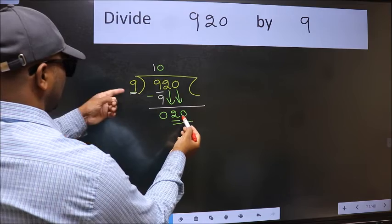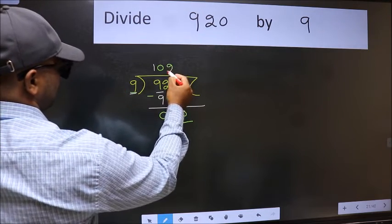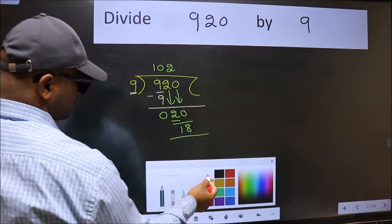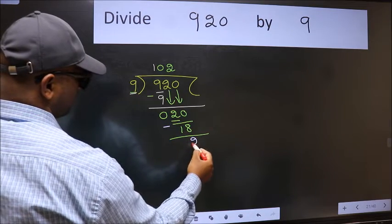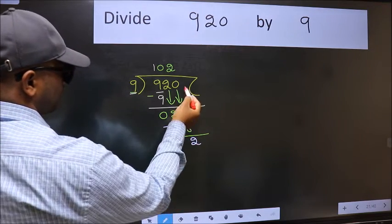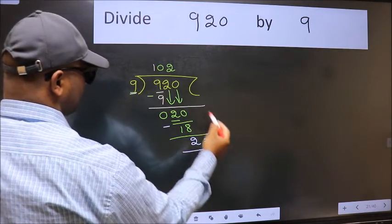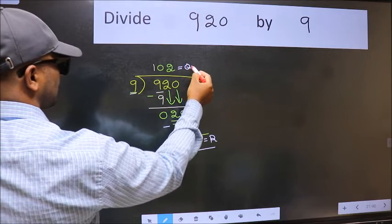A number close to 20 in the 9 table is 9 times 2 equals 18. Now we should subtract. We get 2. No more numbers to bring down. So we stop here. This is our remainder and this is our quotient.